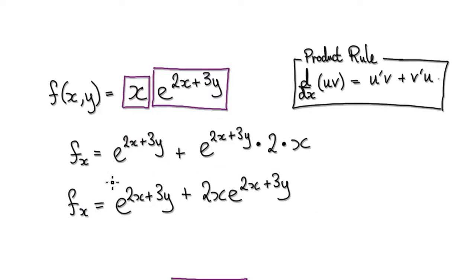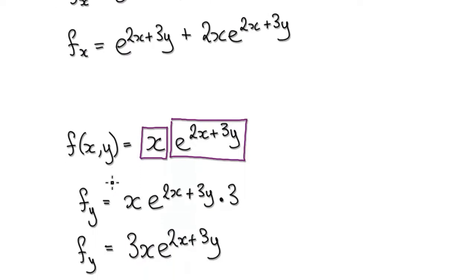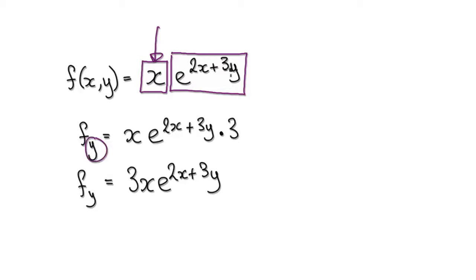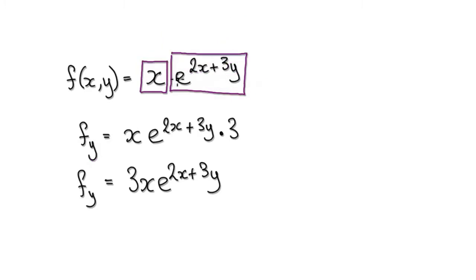So now let's do it with respect to y. Remember, our function is really one block multiplying another block. You're doing it with respect to y this time. Well, this block here is a constant. y is the variable, x is a constant. So you notice that this block here contains the variable, so the whole block here is, in a way, a variable.